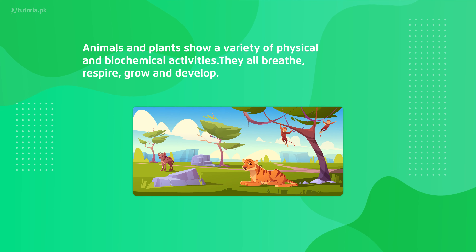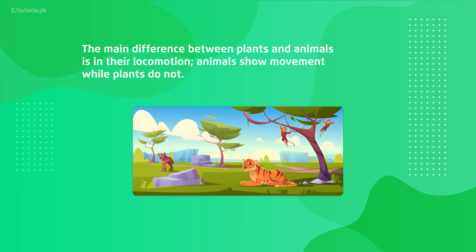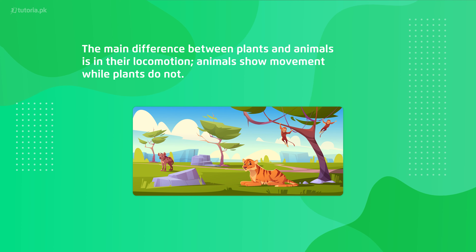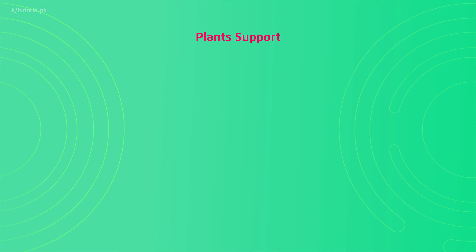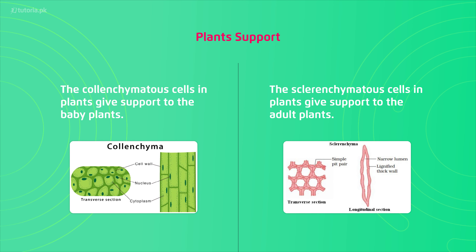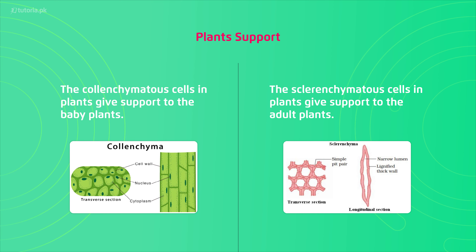If you look at animals and plants, you will see that there are many things common in them because they both are living. But the main difference is that animals can move from one place whereas plants cannot. In this chapter we will discuss the reasons why plants can't move and animals can, and what reasons cause plants to show a certain pattern in movement. Plants are designed to provide support against environmental conditions.